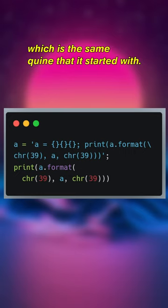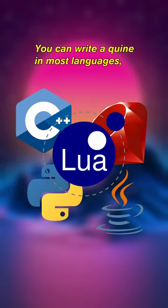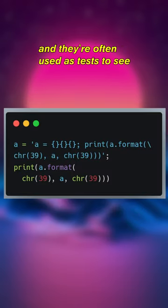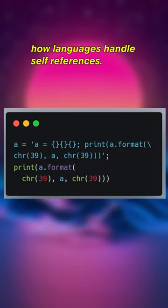The result is that the same string is printed out, which is the same quine that it started with. You can write a quine in most languages, and they're often used as tests to see how languages handle self-references.